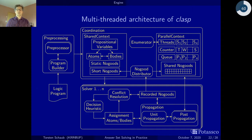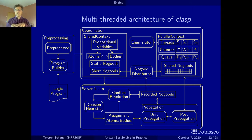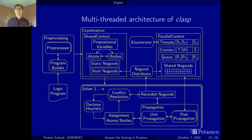Here's the architecture of Clasp — I hope that this doesn't frighten you too much. The first thing to note is that Clasp is multi-threaded, so you can run several copies of Clasp in parallel in shared memory. You have options: you can distribute the search space or different parts of the problem to different machines or cores, or have the same problem running on different cores in parallel with different strategies.